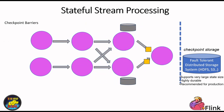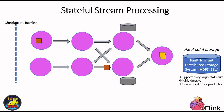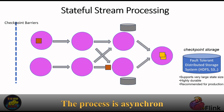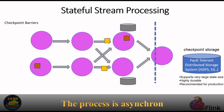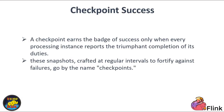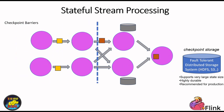When a checkpoint barrier reaches an operator equipped with state, it dispatches an instruction. The operator's job is to craft a duplicate of its state and upload it into fault-tolerant storage. What's vital here is the process's asynchrony — it transpires seamlessly in the background without impinging on your core data flow. All of this unfolds autonomously across each of your parallel processing instances. A checkpoint earns the badge of success only when every processing instance reports the triumphant completion of its duties. In Flink terminology, these snapshots crafted at regular intervals to fortify against failures are called Checkpoints.